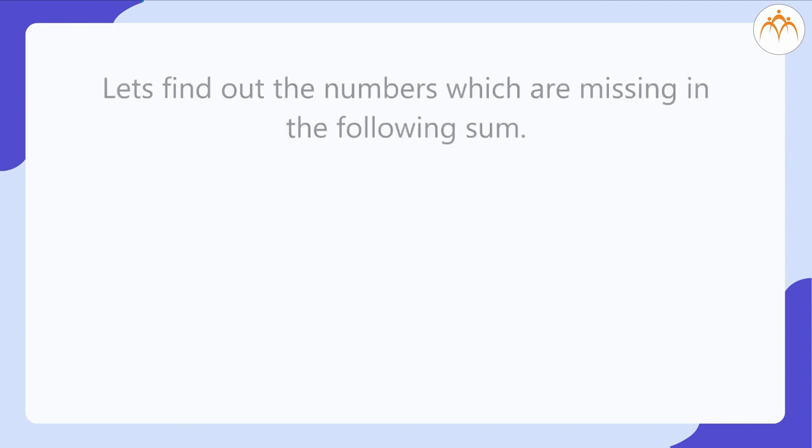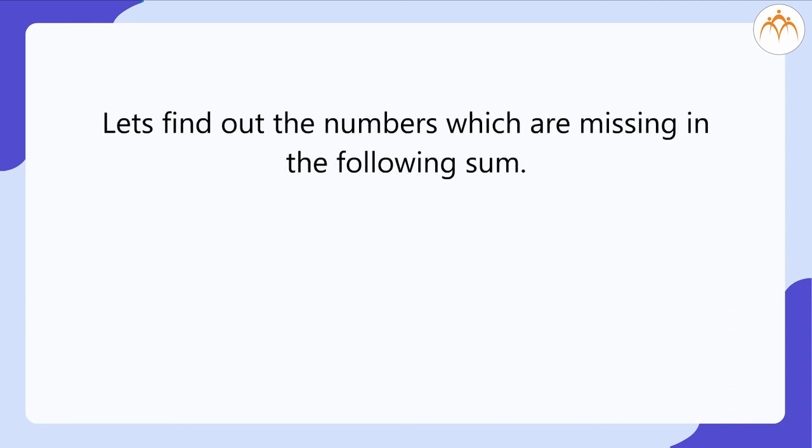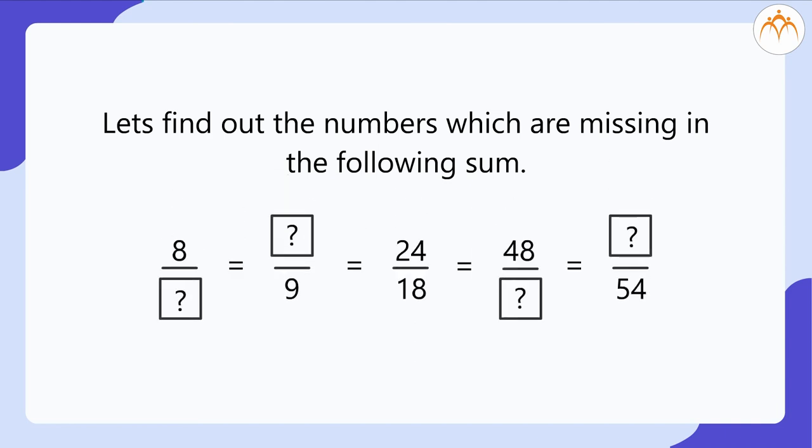Exercise: Let us find out the numbers which are missing in the following sum. 8 divided by ? equals ? divided by 9 equals 24 divided by 18 equals 48 divided by ? equals ? divided by 54.